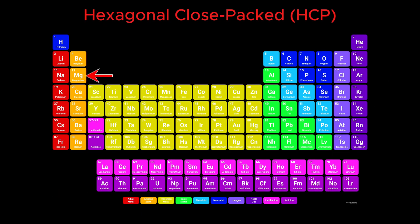Materials like magnesium, zinc, titanium, beryllium, and cobalt fall into another class called hexagonal close-packed, or HCP.